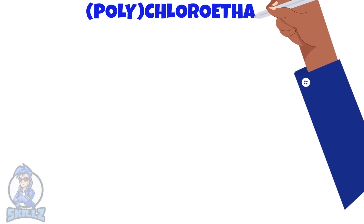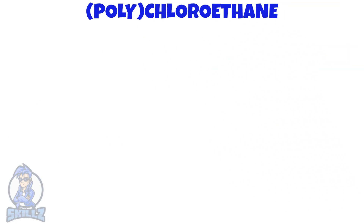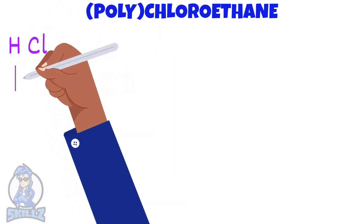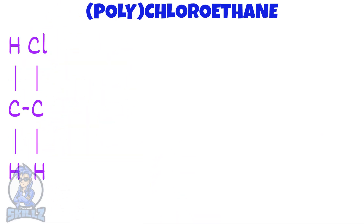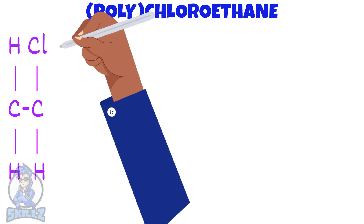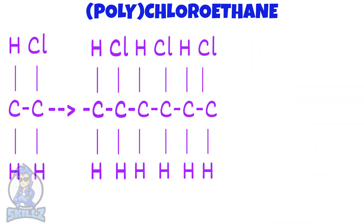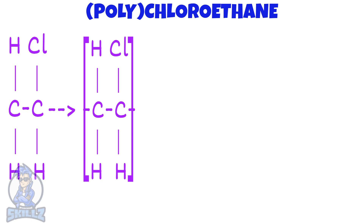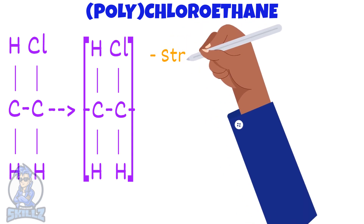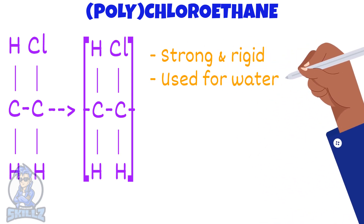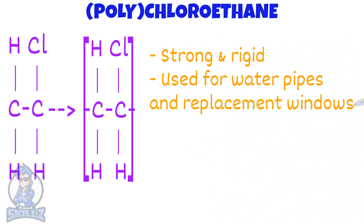Next, we will be using the monomer chloroethene. This is how chloroethene is normally displayed. A polymer of chloroethene would be polychloroethene. It will look like this. Here is the repeat unit for polychloroethene. Polychloroethene is strong and rigid, so it is used for water pipes and replacement windows.